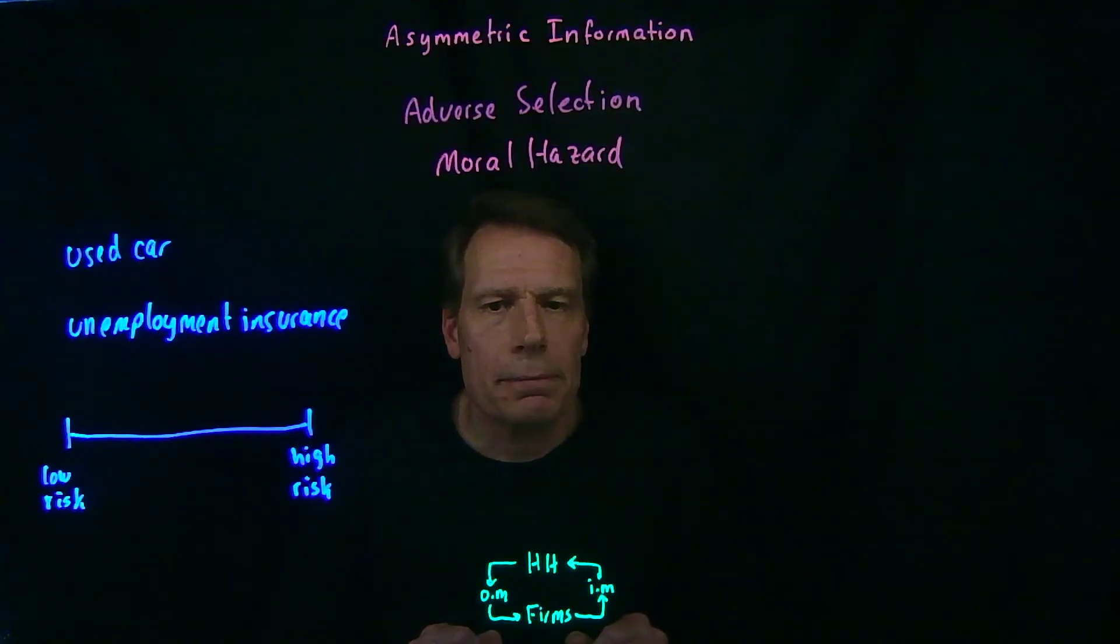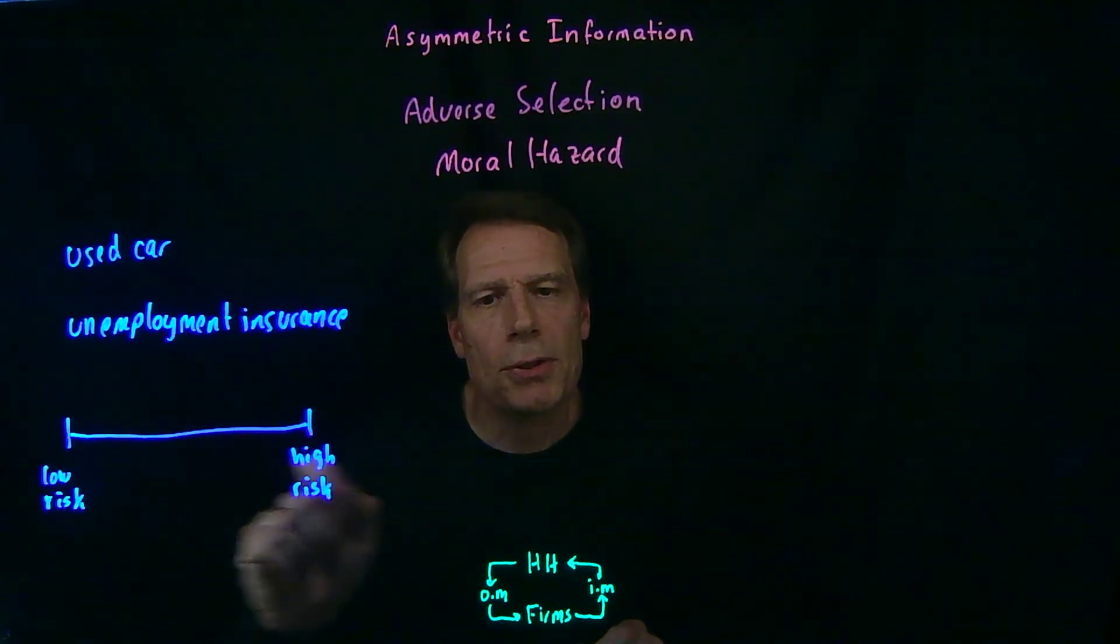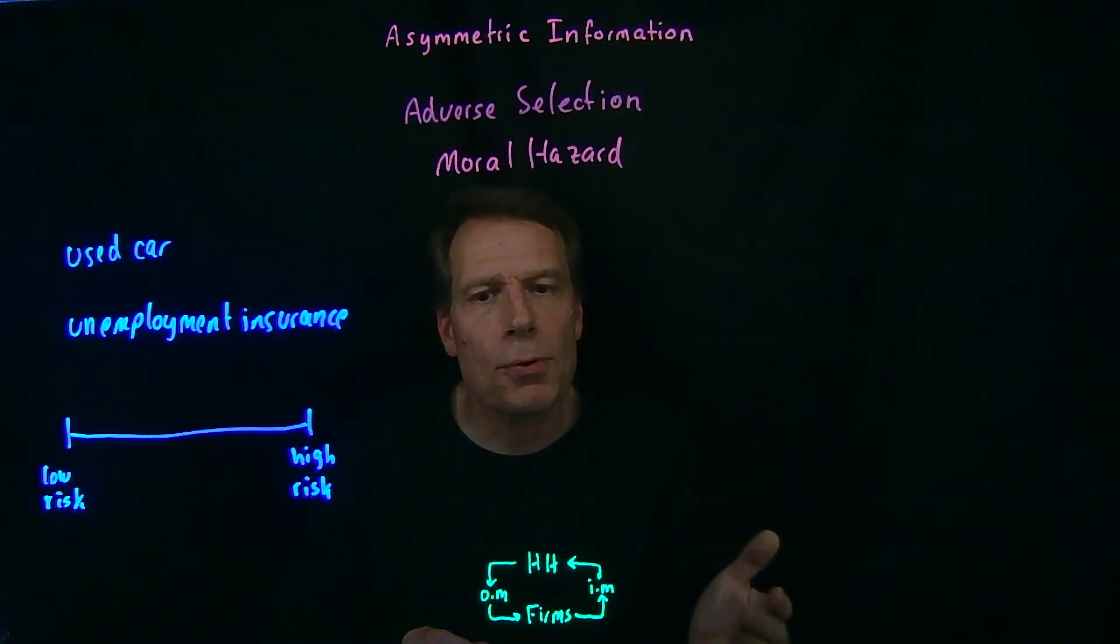Now imagine that you're an insurance company, and you think you're going to get a random selection of people from this continuum. Then you'd be able to calculate what premium you would have to charge for the unemployment insurance in order to have enough money to pay out the benefits you'll owe to those who lose their jobs. But is it really reasonable to expect that you'll get a random selection of people from this continuum? Will the tenured university professor really buy your unemployment insurance? The answer is no. He doesn't need it. He's not going to lose his job.